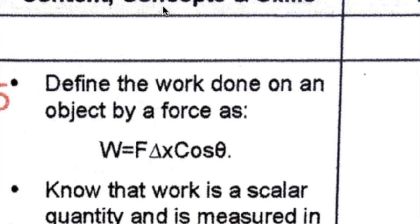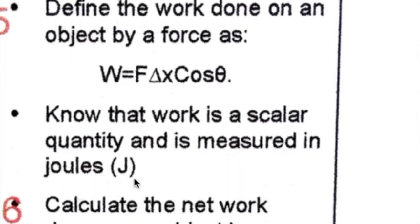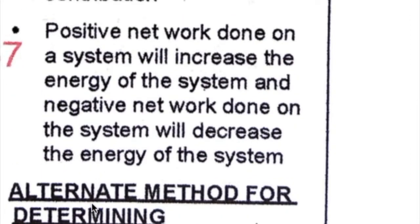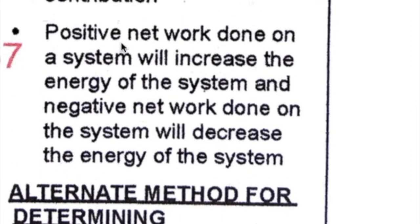So here we see under content, concepts and skills, define the work done on an object by a force as W = F × Δx × cos θ. Know that work is a scalar quantity and is measured in joules, capital J. Calculate the network done on an object by applying the definition of work to each force acting on the object while it is being displaced and then adding up each contribution. Positive network done on a system will increase the energy of the system and negative network done on the system will decrease the energy of the system.